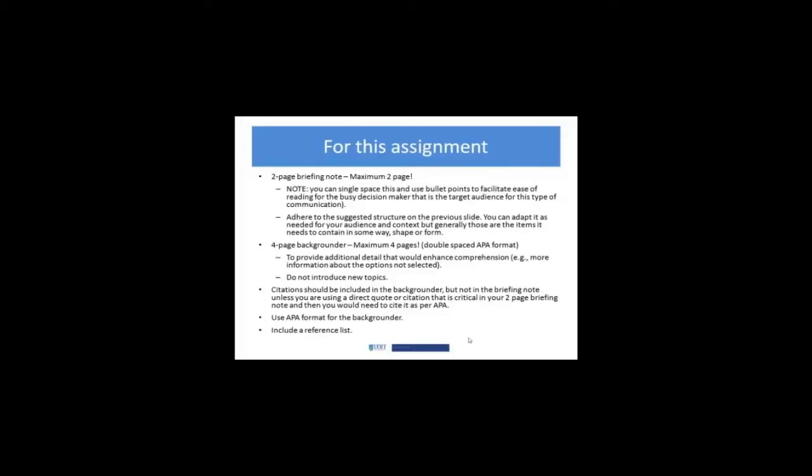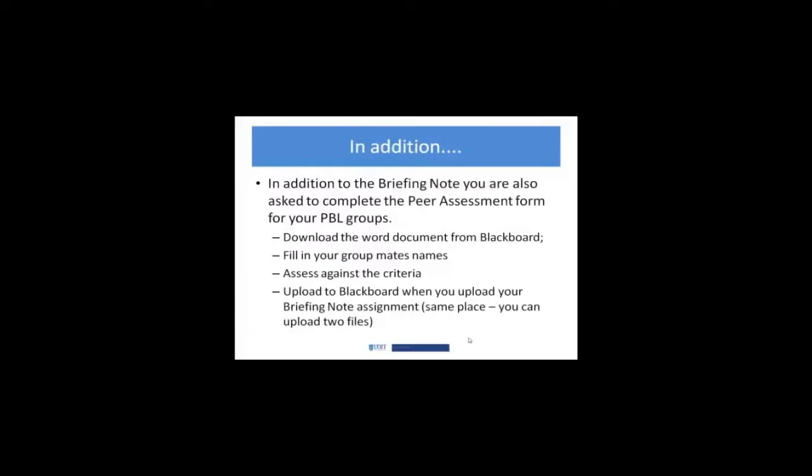Here's how the document flows: don't forget to include a reference list. For this assignment you'll have a cover page, then the first two pages will be your single-spaced briefing note, followed by four pages of backgrounder, and then your reference list. I've put a sample in the Blackboard shell so you can see one — it covers content different from what we've focused on in the course, but you'll see the structure, approach, and formatting. You can use that as a guide.